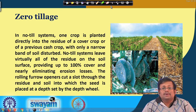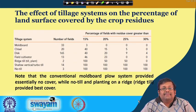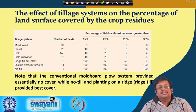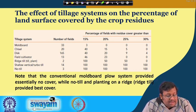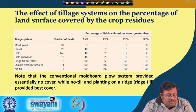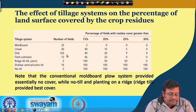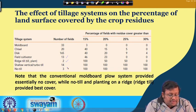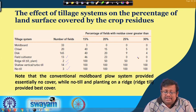Let us look at the effect of tillage system on the percentage of land surface covered by crop residues, taken from a research study. The number of fields studied: moldboard — 33, chisel — 20, disc — 165, field cultivator — 13, ridge-till — 2, shallow vertical or turbo-till — 14, no-till — 30. We examine the percentage of fields with residue cover greater than 15, 20, 25, and 30 percent.